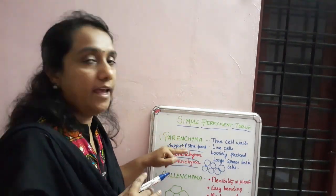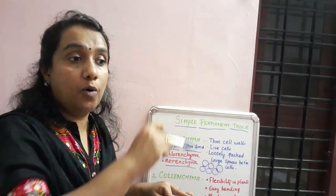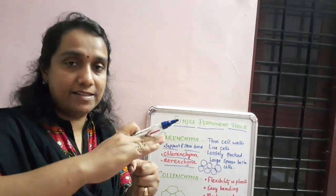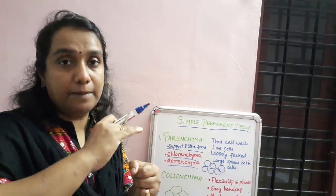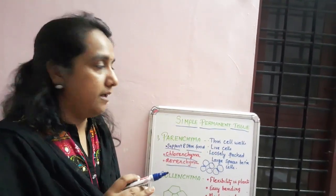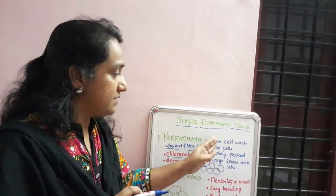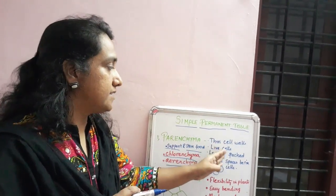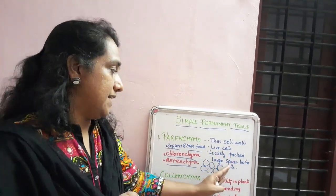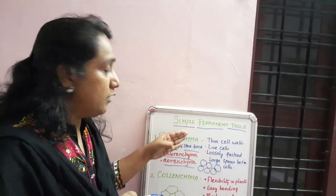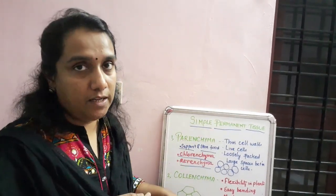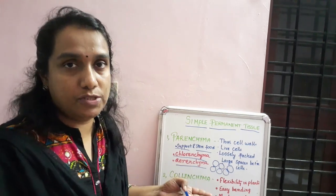To summarize: parenchyma can be seen in the outer layer of a plant. If you take a plant stem section, the outermost layer has parenchyma. It has thin cell walls, it is composed of live cells, loosely packed, with large spaces between the cells. When studying the different types of simple permanent tissue, compare and study — it will be easier for you.